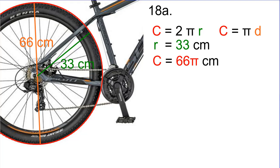We have the diameter, which is 66 centimeters, so our radius would be 33. To find the circumference, we could do 2 times pi times R, which would be 66π. Or just do pi times D — since we already have the diameter, just multiply by pi. So our circumference would be 66π centimeters.